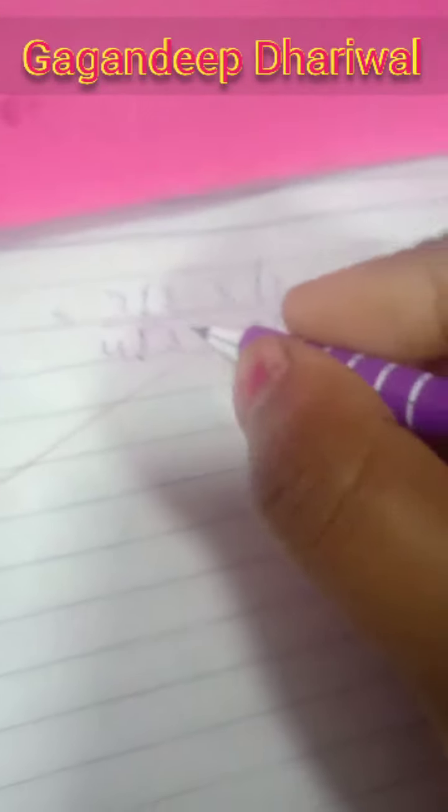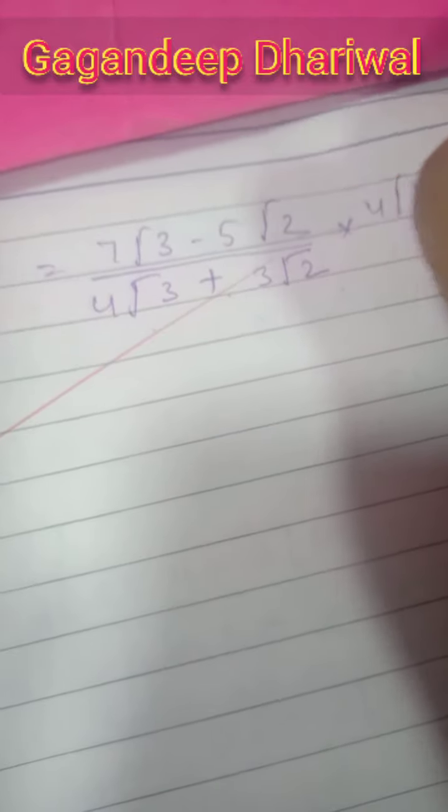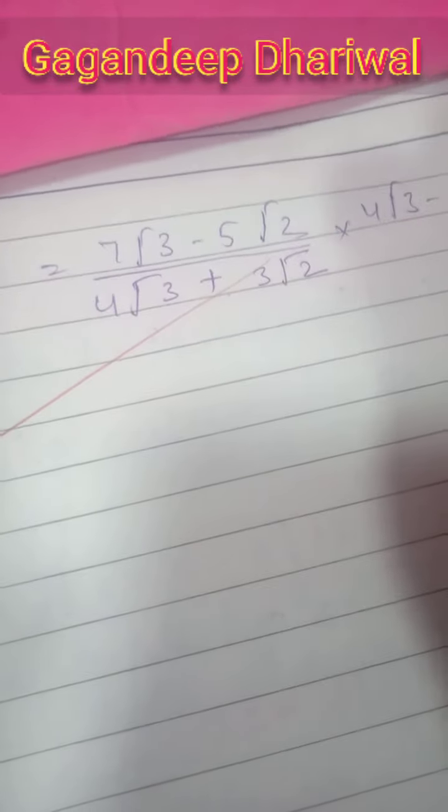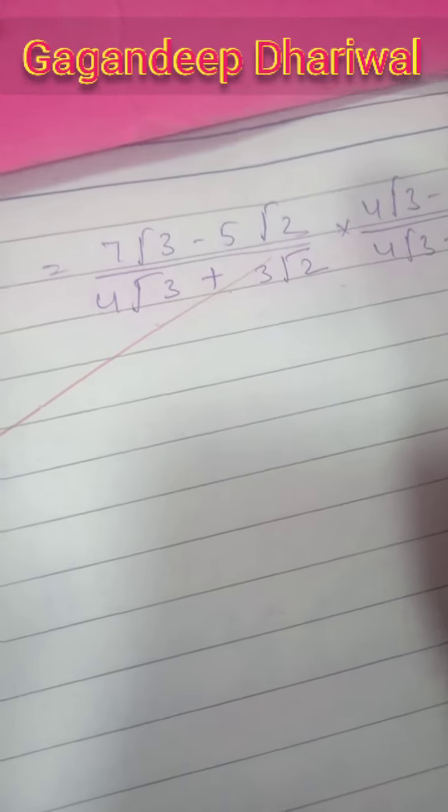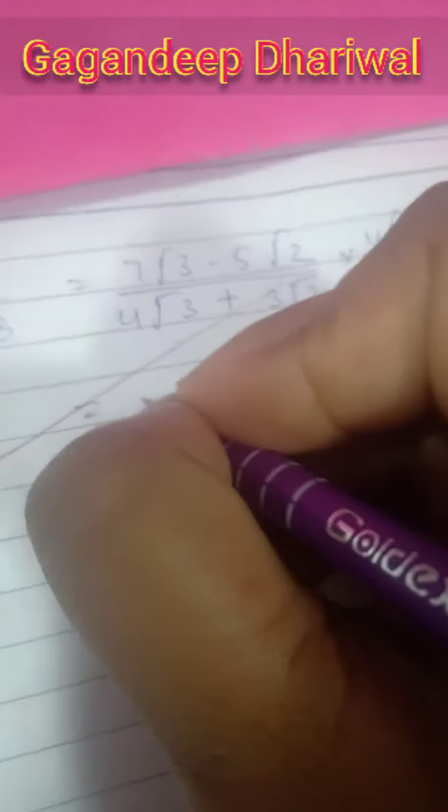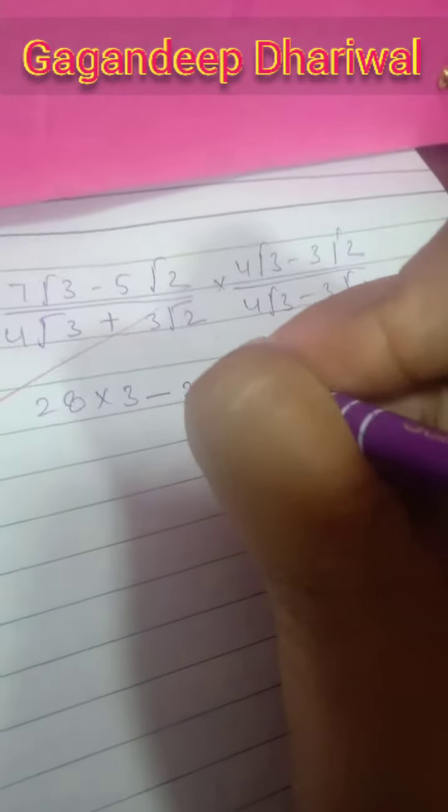Now we have to multiply and divide with its conjugate. Here the middle sign is plus, so we have to put just minus. That is its conjugate: 4√3 - 3√2. So we have to multiply this with that. Now see, 7√3 times 4√3 becomes 28 times 3.